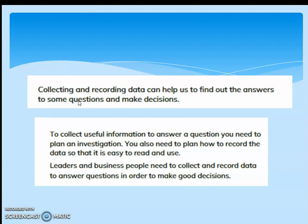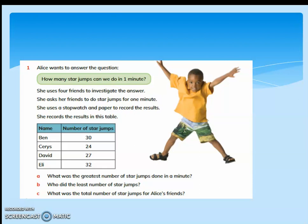To collect useful information to answer a question, you need to plan an investigation. You will prepare some questions. You also need to plan how to record the data so that it is easy to read and use. Alice wants the answer to the question: how many star jumps can we do in one minute? She uses a stopwatch and paper to record the results.